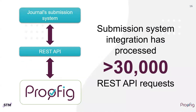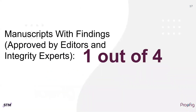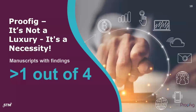We have also received more than 30,000 REST API requests, and we are fully integrated into publisher submission systems. Out of all these papers, editors and integrity experts using the Proofig AI system have recognized that 25% include some form of image issues. What does this mean? Well, Proofig is not a luxury — it's a necessity.